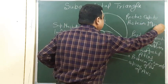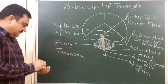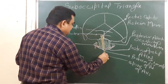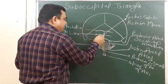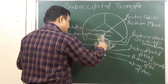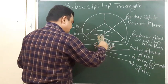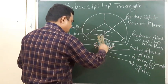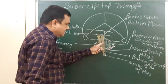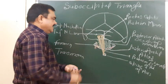The muscle which arises from the spine of the axis and is inserted lateral to this — this muscle is longer than the previous one, that's why it is known as the rectus capitis posterior major muscle.